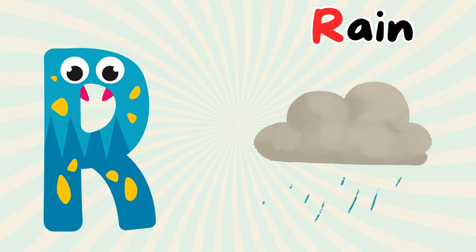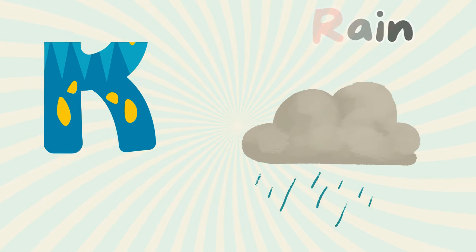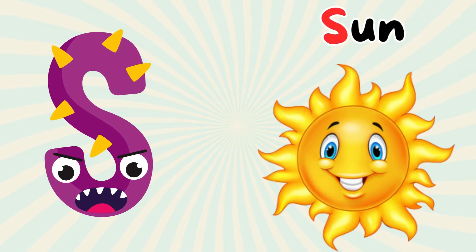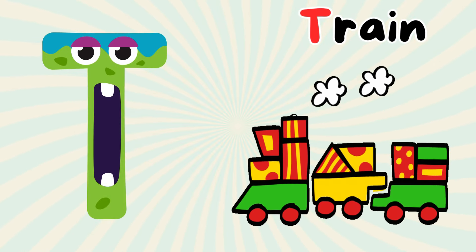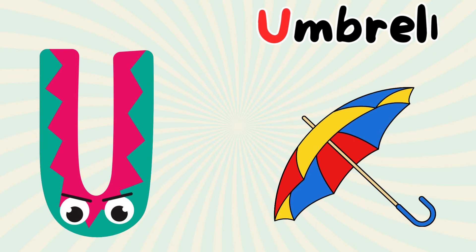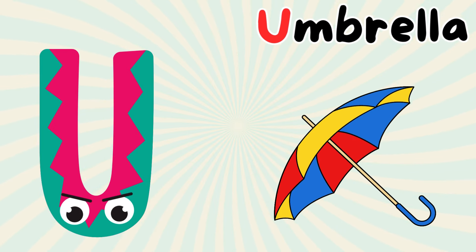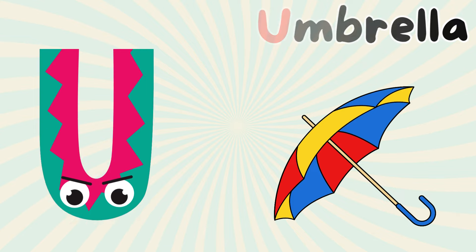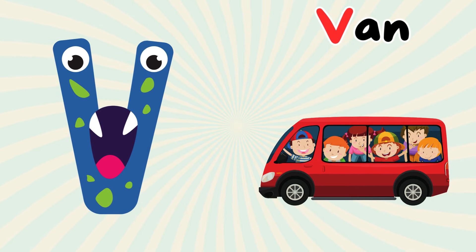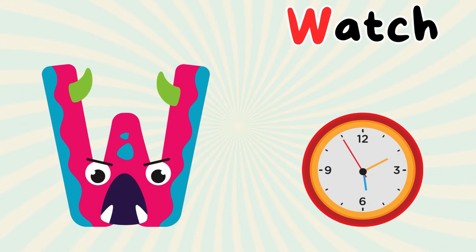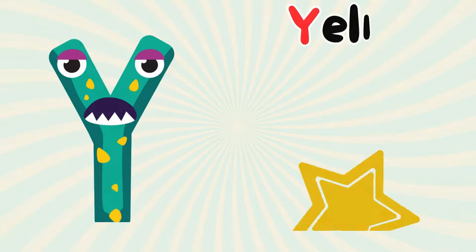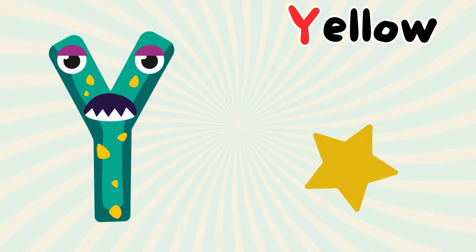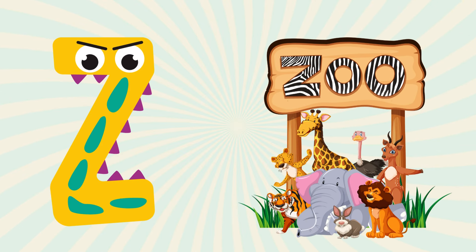R for rain. S for sun. T for train. U for umbrella. V for van. W for watch. X for box. Y for yellow. Z for zoo.